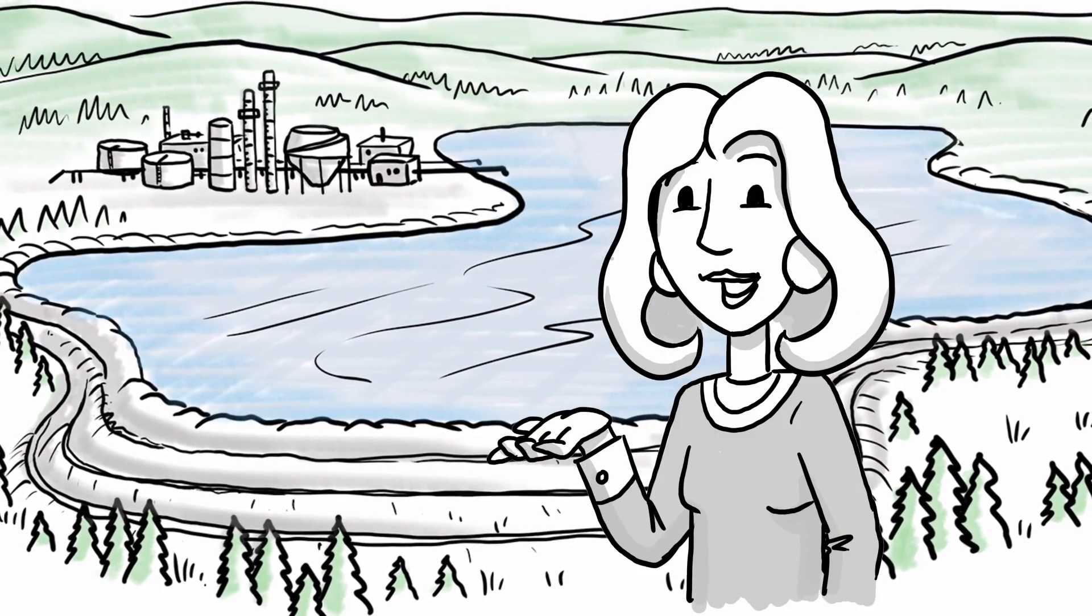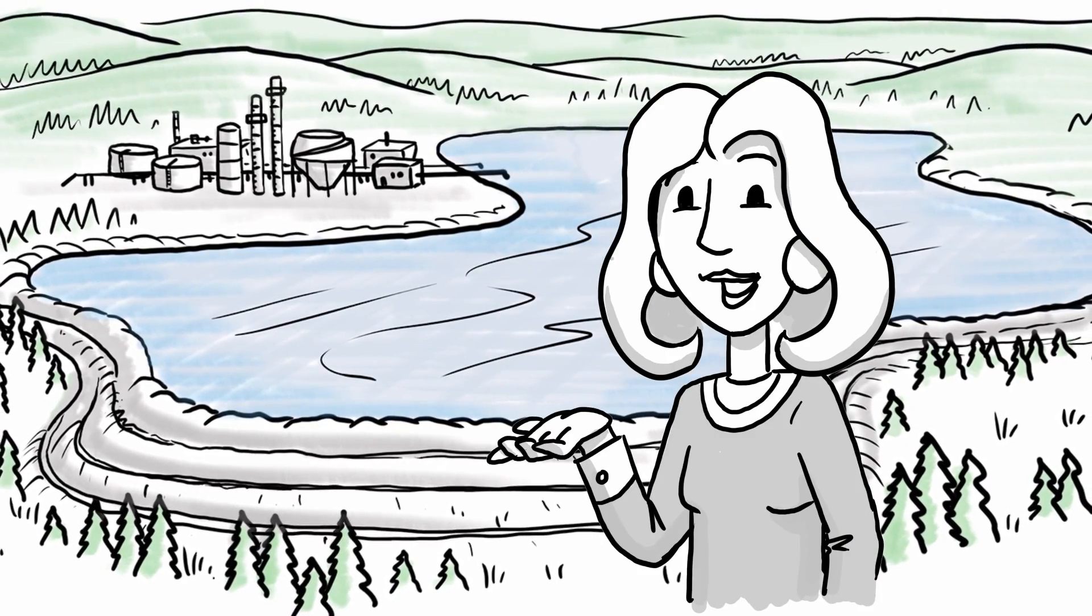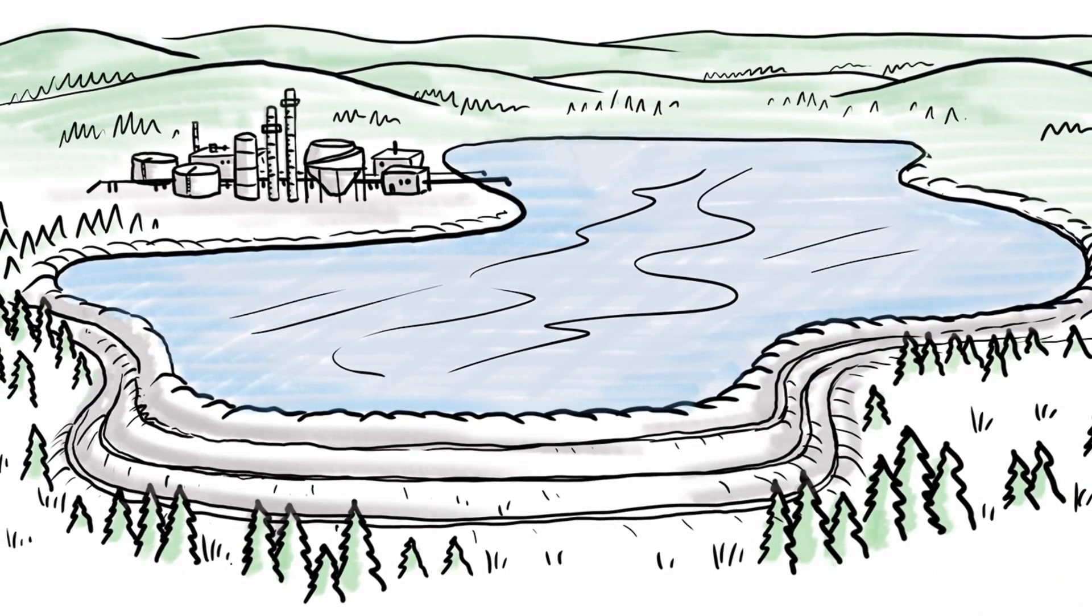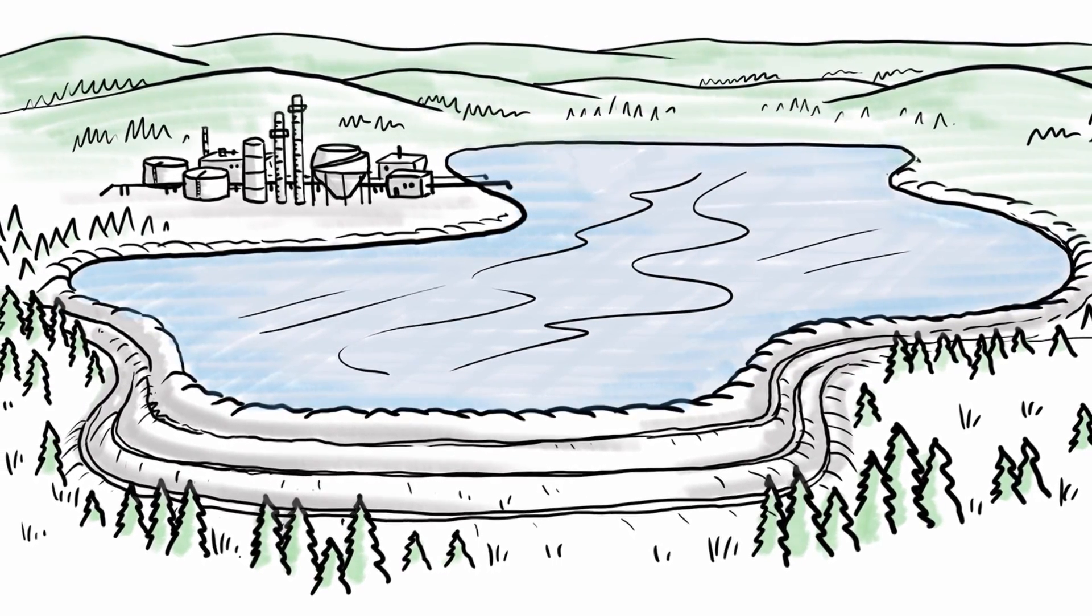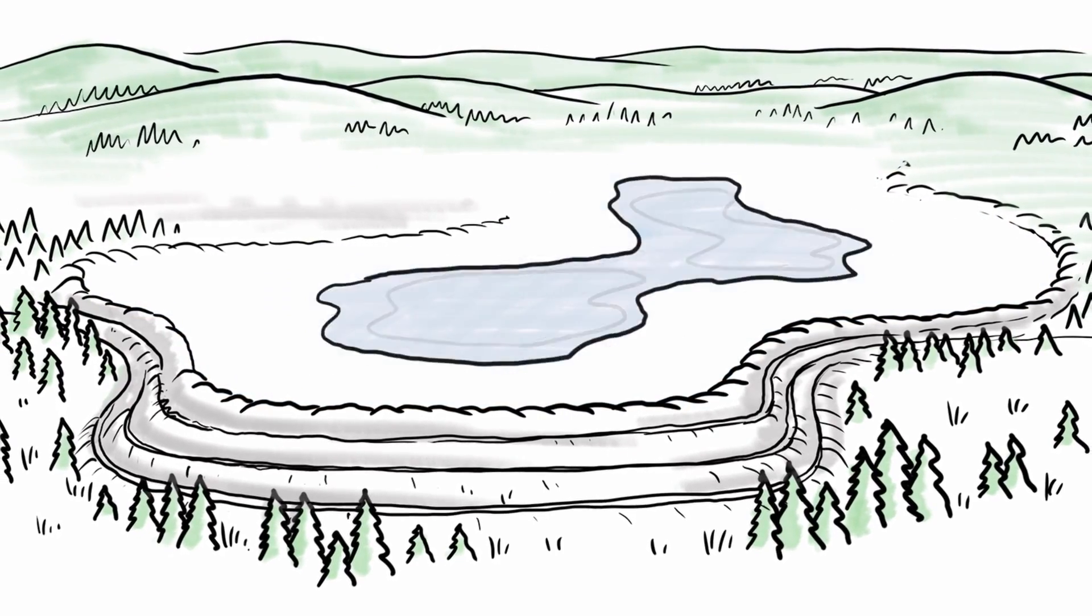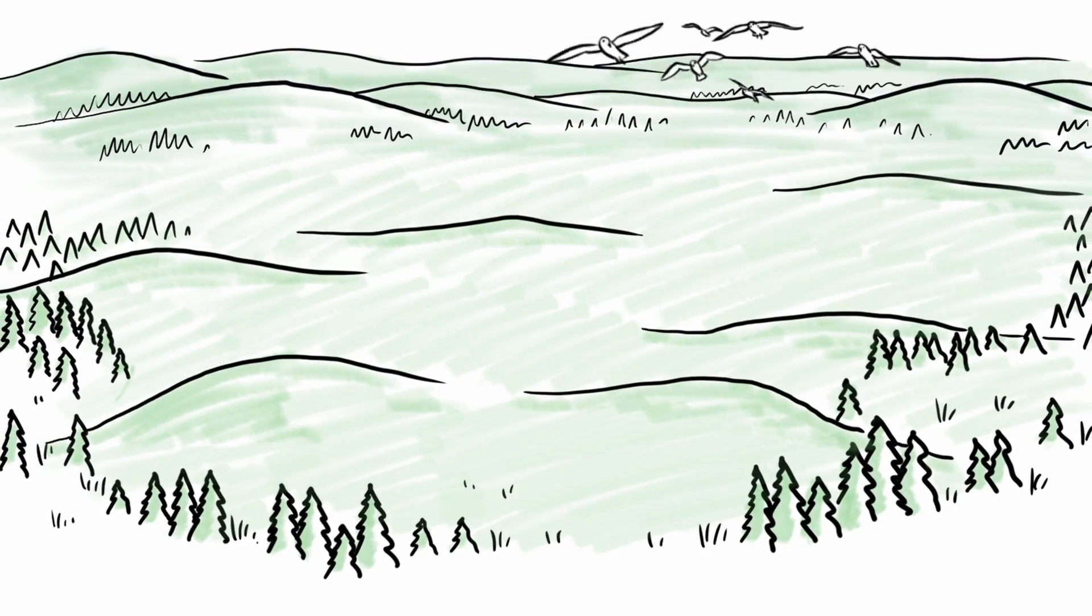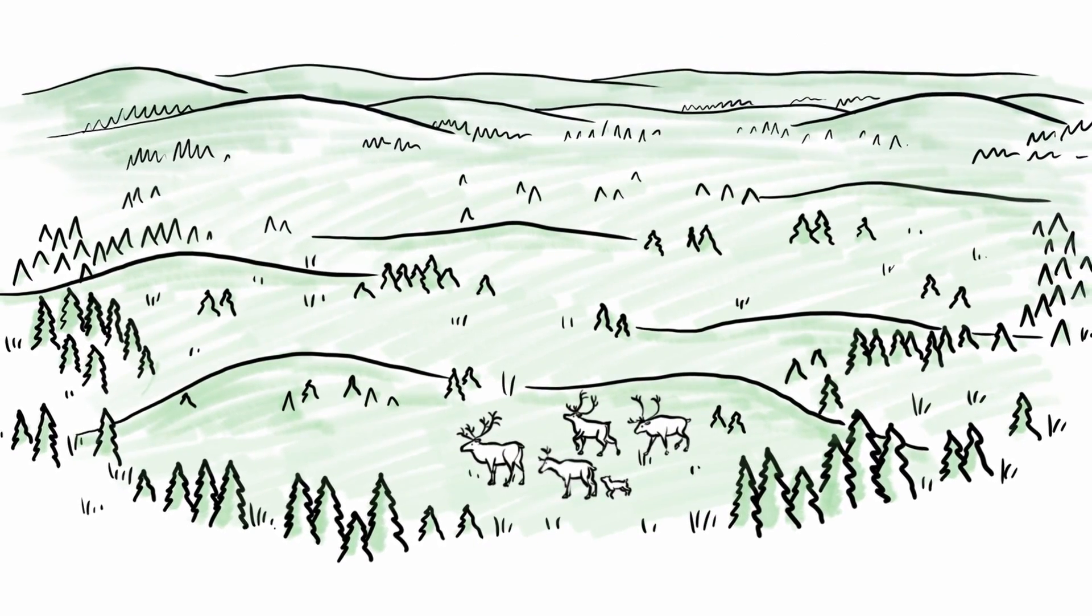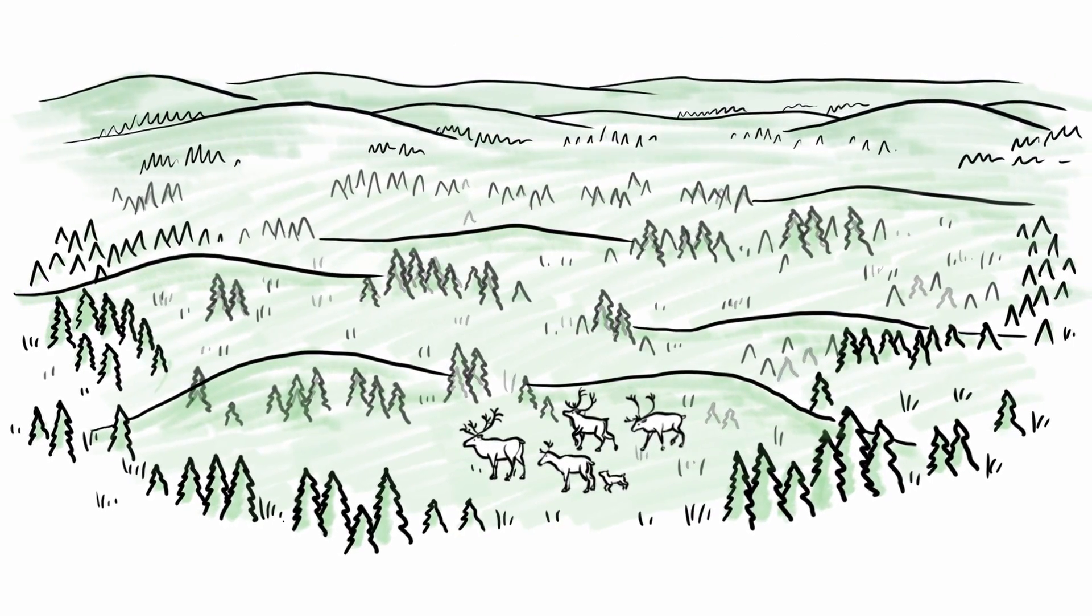Rita says that managing tailings is a challenge because it is difficult to remove all the water that was mixed in. Tailings must settle to the bottom of the pond. The extra water is removed and the soil is put back on top, so the trees, shrubs and other plants can grow and the wildlife can move back in.